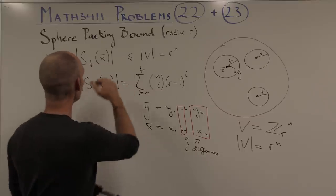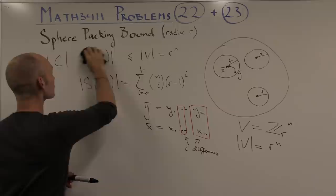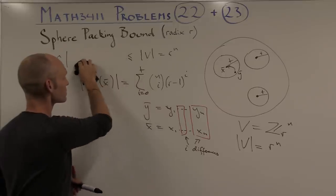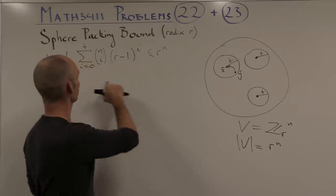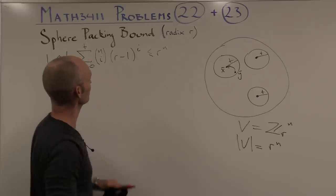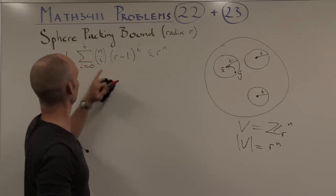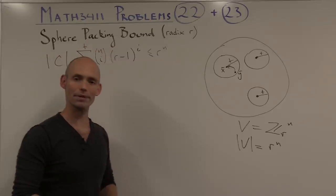So now we have the sphere packing bound, if we just replace this expression by this sum there. We've calculated each of the terms in the original inequality, and that leads us exactly to the sphere packing bound for radix r. And there we're done.